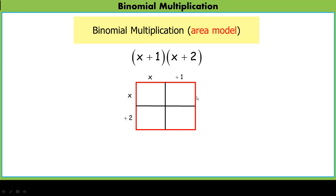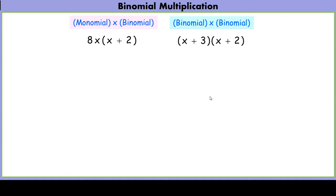This is what's considered an area model. Basically, it's just a rectangle that we're going to represent the area of using these two binomials. Before we learn exactly how to do it, let's learn what it is and why it works. We're going to take a look at monomial times binomial multiplication — something you already understand — and compare it to the binomial-binomial algorithm. First, understand that this is in a factored form; we're saying this is a multiplication problem: 8x times this binomial.